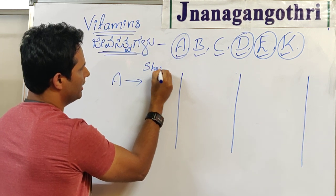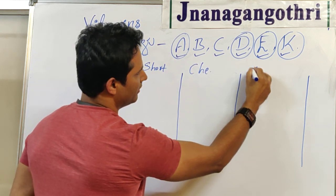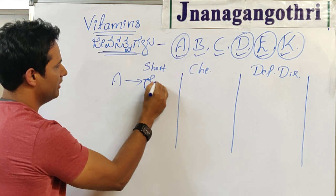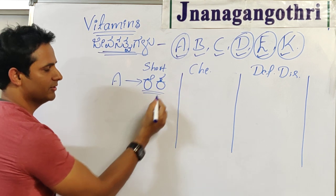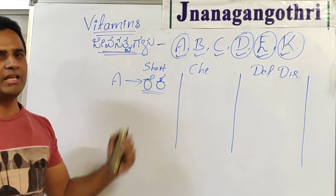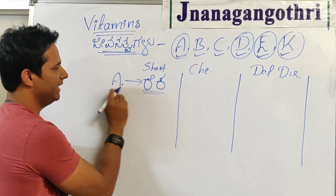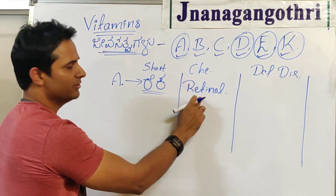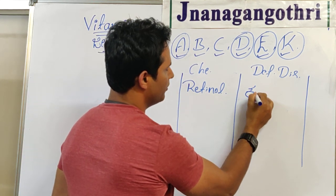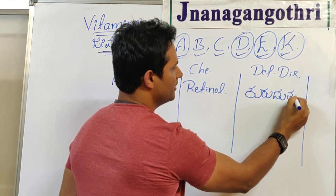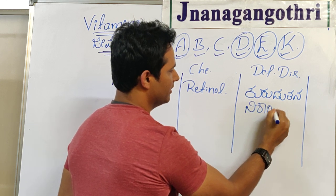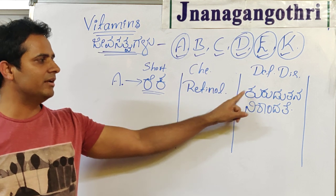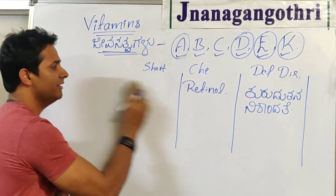For vitamin A, the shortcut is to remember the name 'Reka' — a familiar girl's name. 'Re' stands for the chemical name Retinol. 'Ka' stands for deficiency disorder — Kurudutana (blindness), also known as night blindness in English. So the trick is: A → Reka → Retinol and Blindness (night blindness).